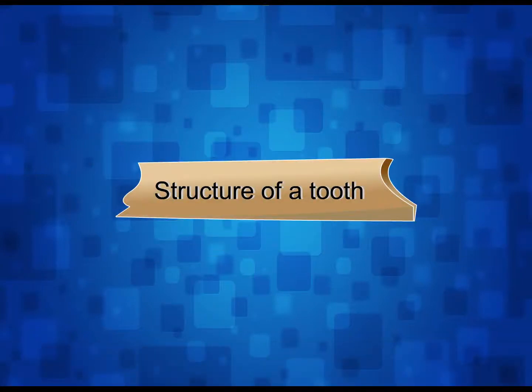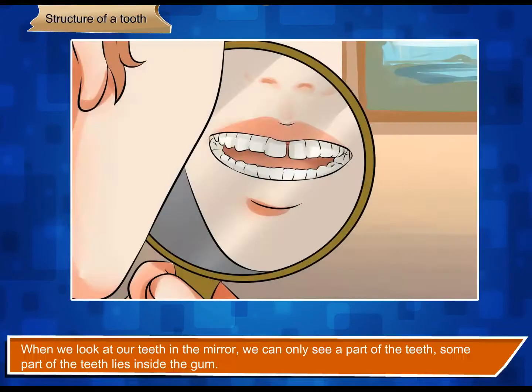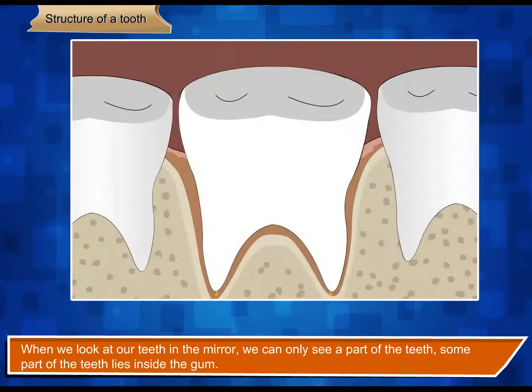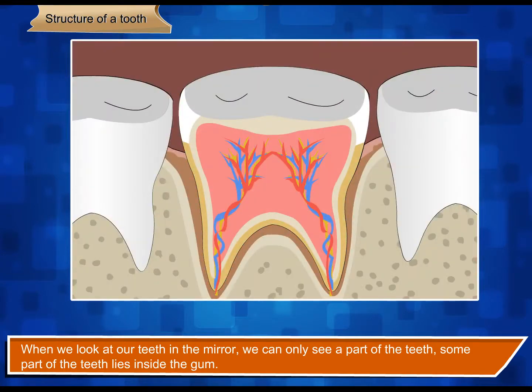Structure of a tooth. When we look at our teeth in the mirror, we can only see a part of the teeth. Some part of the teeth lies inside the gum.